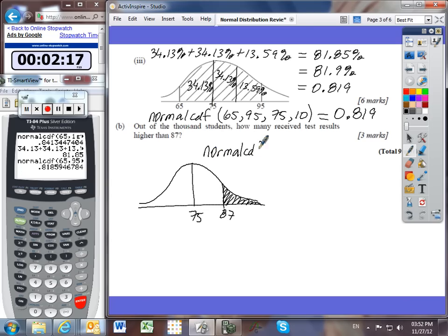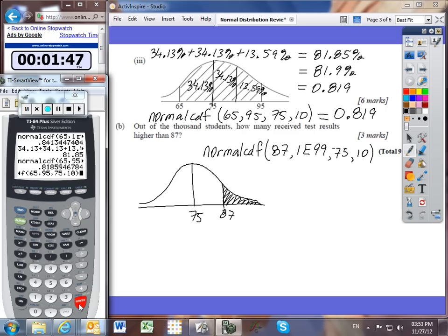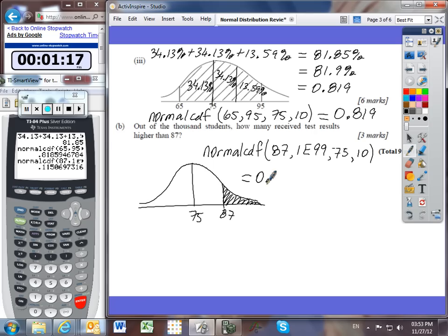And so on your calculator, we can do the normal CDF starting from a left bound, a lower bound of 87, going up to a huge number like 1 million, but I'm going to make it even bigger. Instead of 6 zeros, I'll go 99 zeros using this E notation. And then 75 is the mean and 10 is your standard deviation. A clever trick that you can do in your calculator is just to bring up the last function that you had. We can say second enter, and it will bring up the last thing that you typed. All we have to do is make a couple of changes to these values. And so we're starting from 87, and we're going up to 1e99. And it tells us that the probability, rounded to three significant figures, is 0.115.